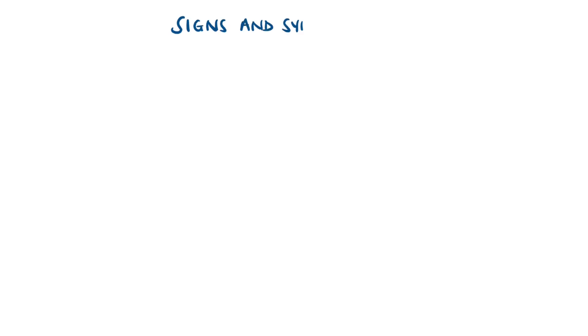Initially, multiple myeloma may be asymptomatic, but over time features will develop, and the most common ones can be remembered with the criteria CRAB.